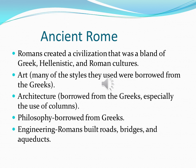Now we're going to discuss ancient Rome. Rome created a civilization that was a blend of Greek, Hellenistic, and Roman cultures. Art, architecture, and philosophy played a huge role in Roman culture, but nearly all those features they borrowed from the Greeks. Engineering was a great Roman accomplishment — Romans built roads, bridges, aqueducts, and sewage systems.